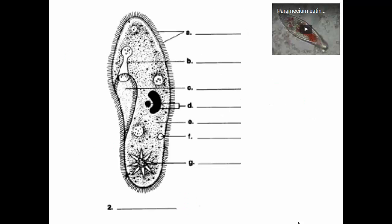This is a paramecium. It's shaped like a footprint. Remember, the paramecium has a shell around it — a pellicle — that gives it this distinctive shape. What do we call all these things on the outside? Cilia.